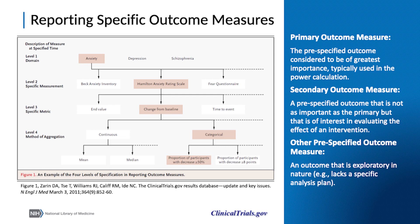A well-planned outcome measure identifies a domain for the analysis — in this example, anxiety — defines a specific measurement tool to explore the domain, like the Hamilton Anxiety Rating Scale, indicates a specific metric for determining an effective intervention, such as change from baseline, and identifies a method for aggregating collected data, like the proportion of participants with a greater than or equal to 50% decrease in the measured scale score.